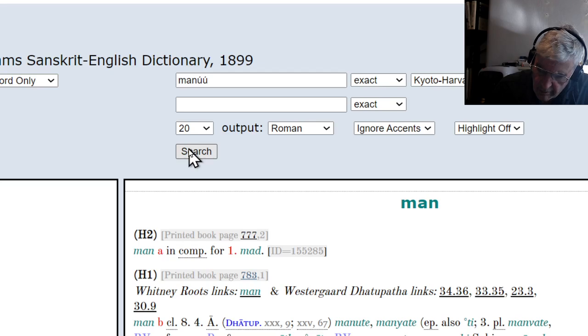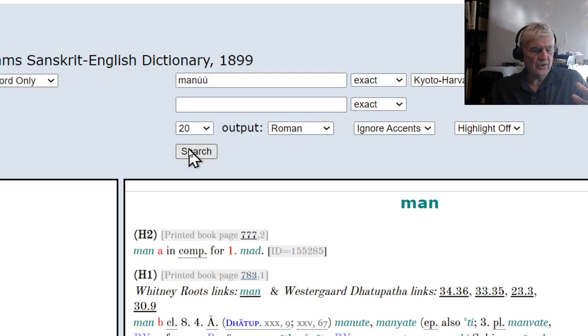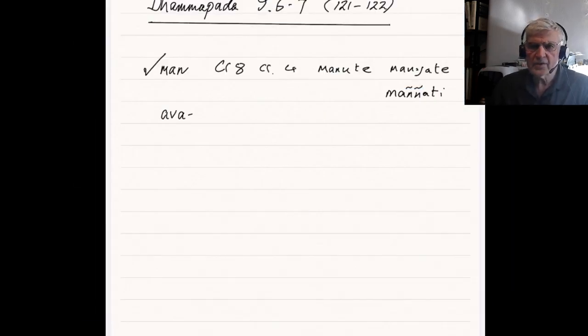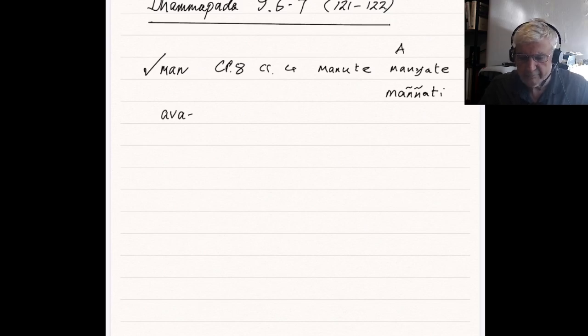It's in Sanskrit, it's a class eight and a class four verb. Atmanipada, either manute or manyati. It's the manyati, that's reflected in Pali. So the manyati becomes manyati in Pali, which is just to think. Kim manyati, what do you think about it? With the prefix, verbal prefix, ava. With the prefix... There we are. Man, class eight, class four, manute, that's the class eight one, which isn't reflected in Pali, whereas the class four one, class four atmanipada, manyati in Sanskrit, manyati in Pali.